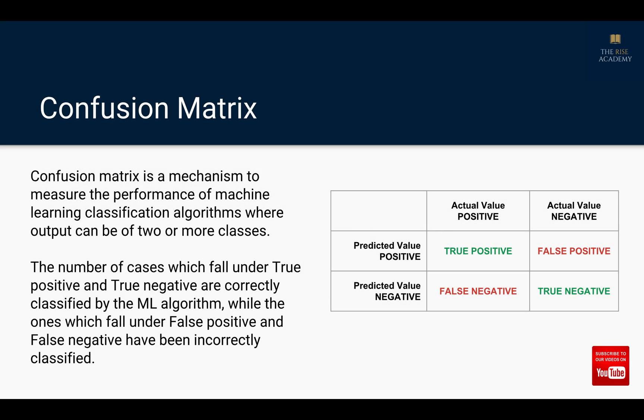Confusion matrix is a mechanism to measure the performance of machine learning classification algorithms where the output can be of two or more classes.